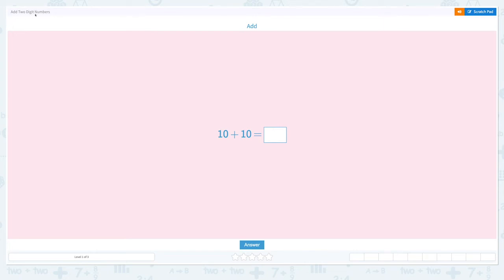Add two digit numbers. Add 10 plus 10. Let's use standard form: 10 plus 10. 0 plus 0 equals 0.